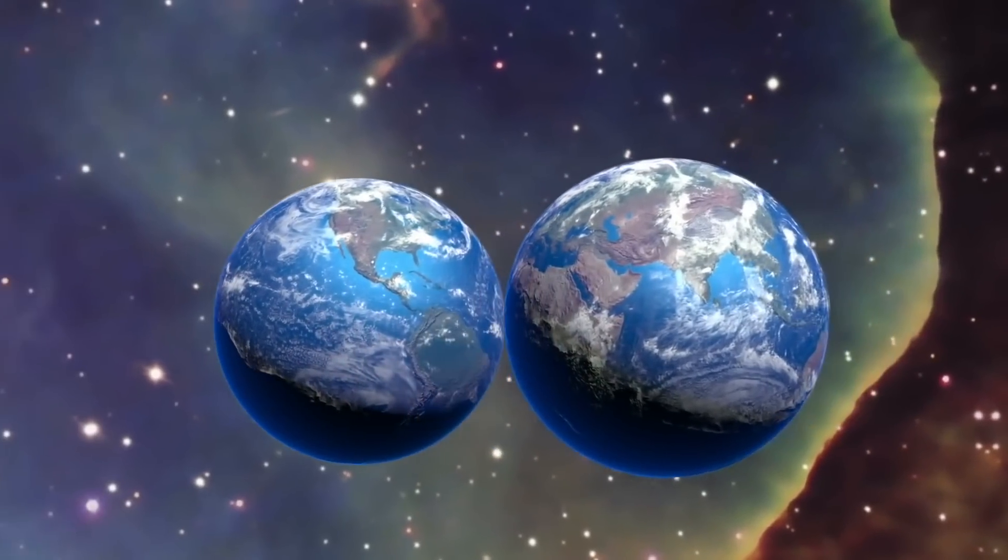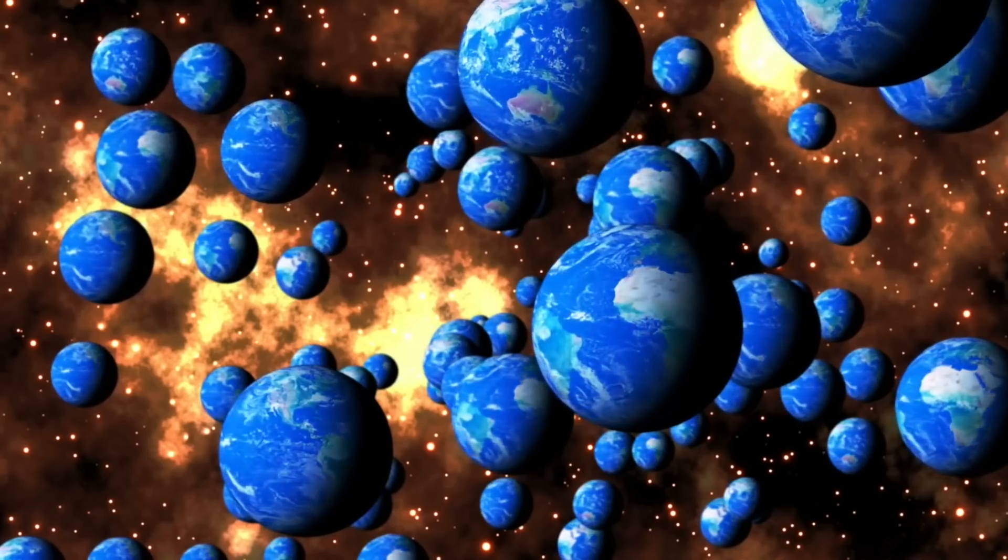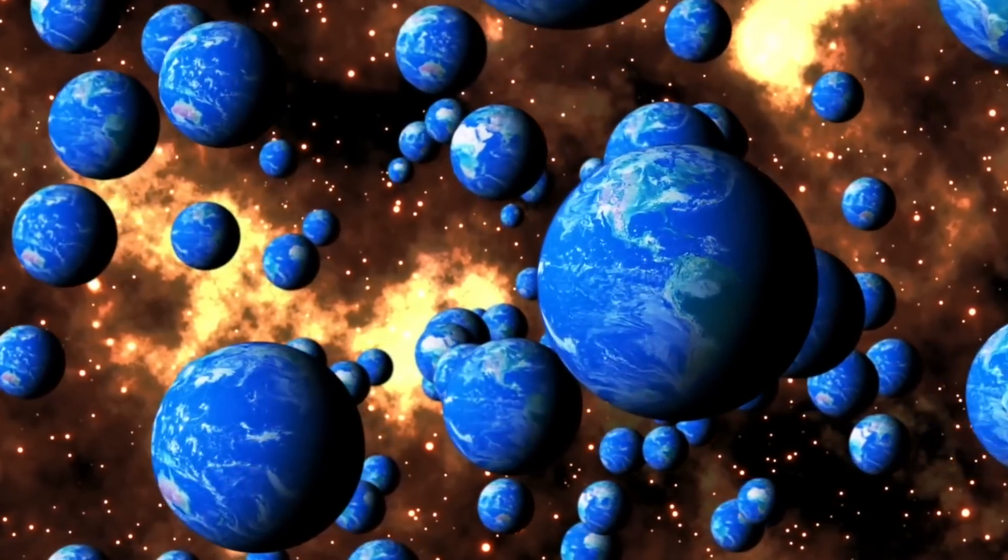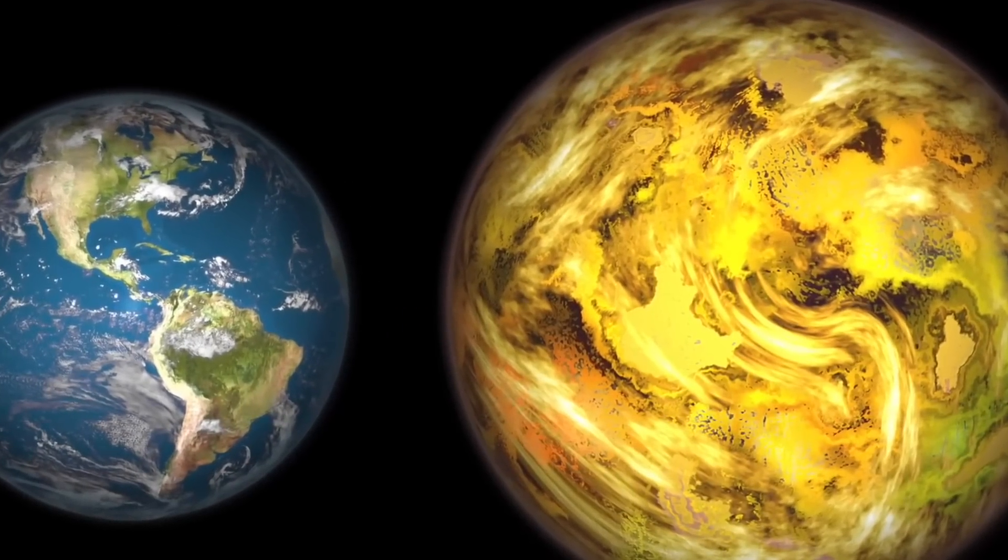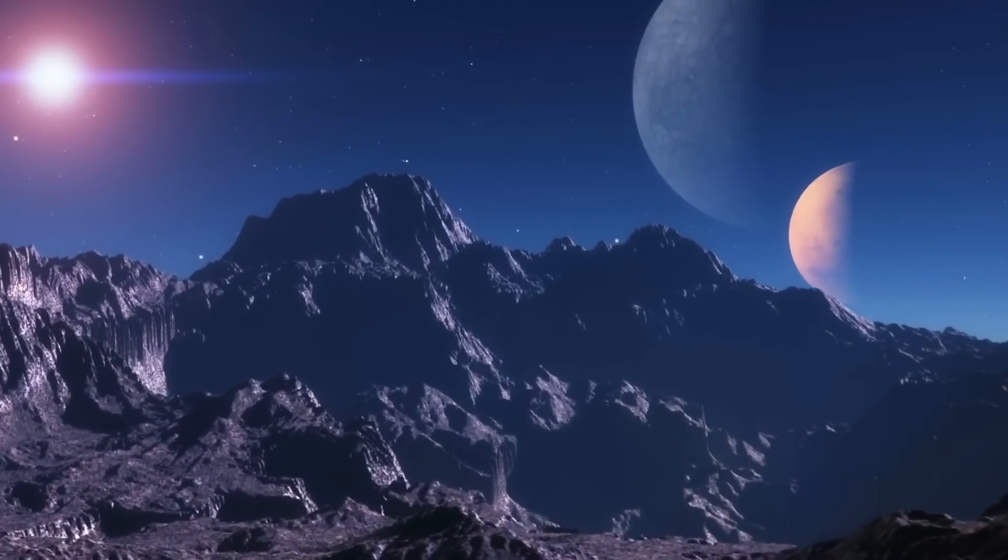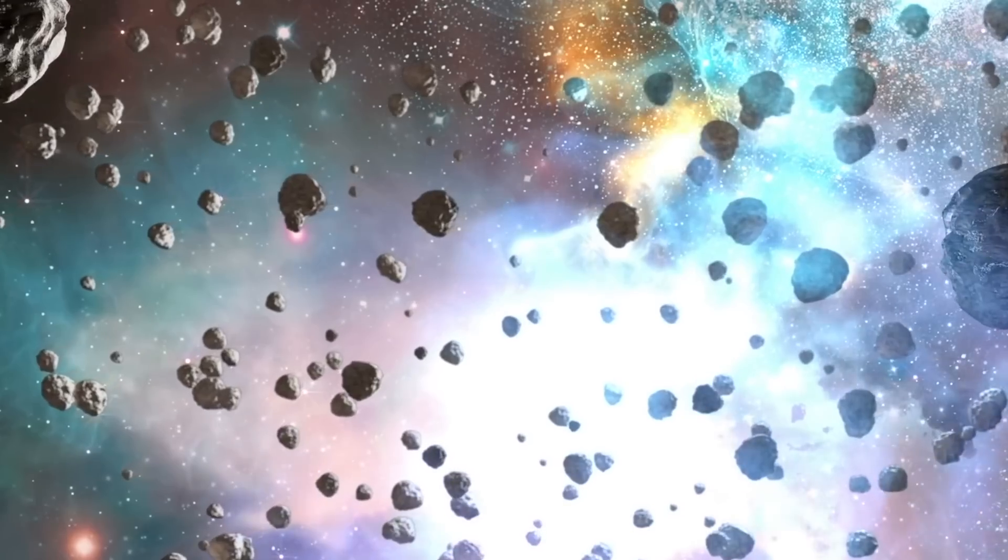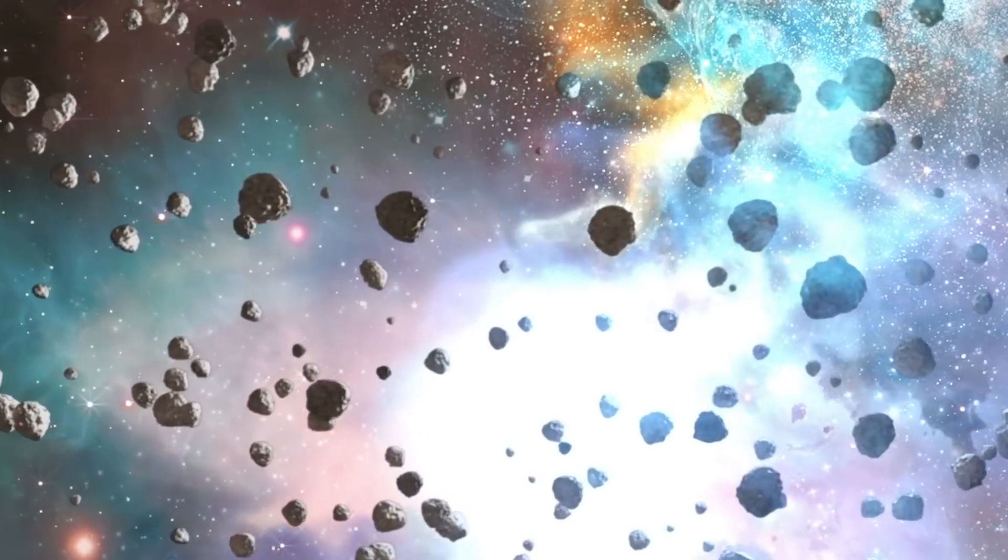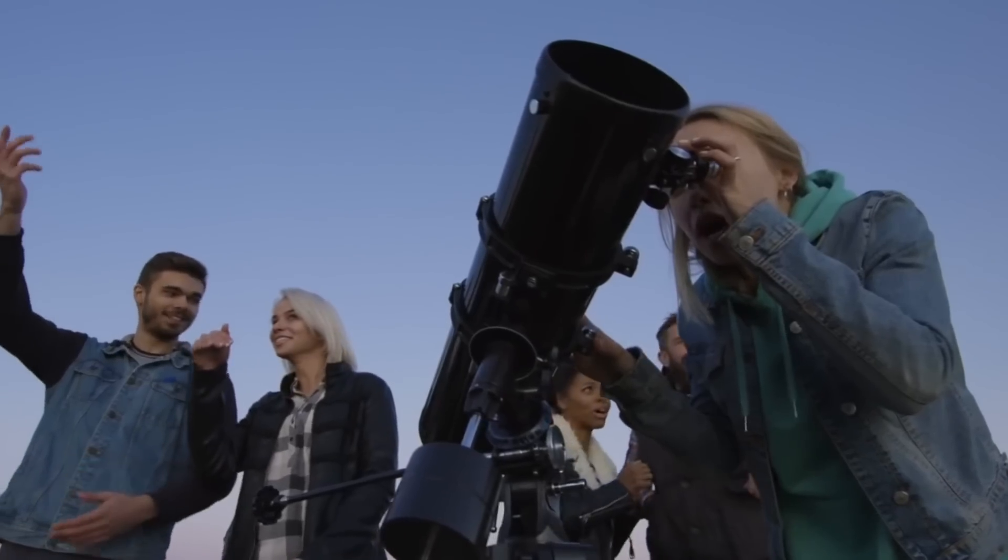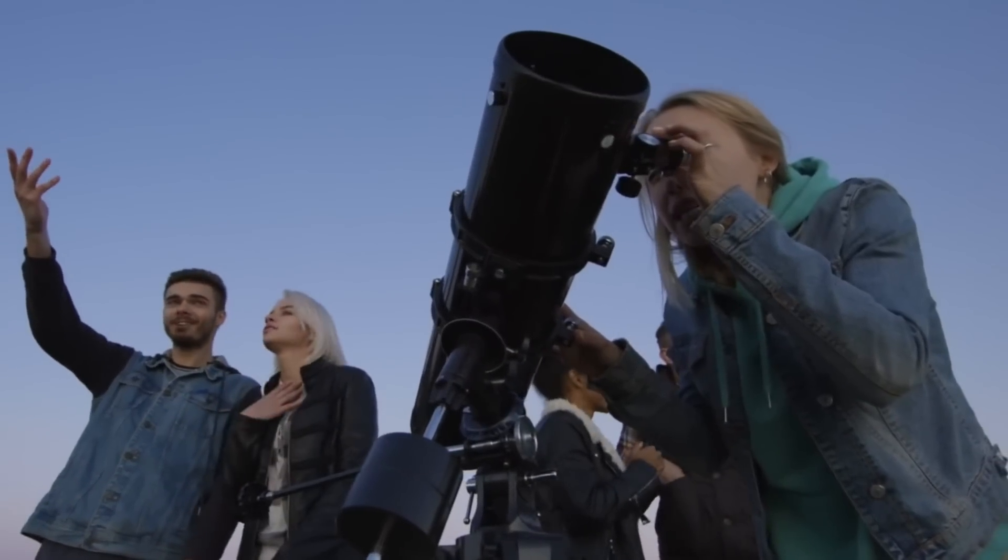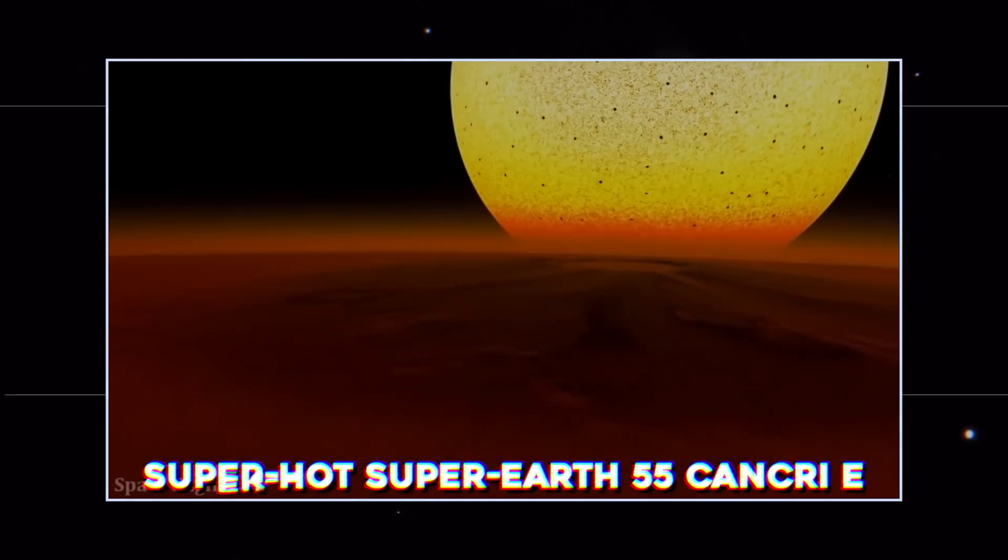The lava-covered 55 Cancri e and the airless LHS 3844 b. Scientists will train Webb's high-precision spectrographs on these planets with a view to understanding the geologic diversity of planets across the galaxy, as well as the evolution of rocky planets like Earth. So let's take a look at these one by one: super-hot super-Earth 55 Cancri e.